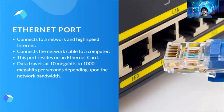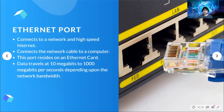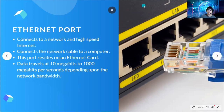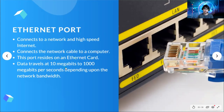The Ethernet port connects to a network and high-speed internet. It connects the network cable to a computer. This port resides on an Ethernet card. Data travels at 10 megabits to 1000 megabits per second depending on the network bandwidth. The cable used is the RJ45 type of cable in order to connect to the internet.